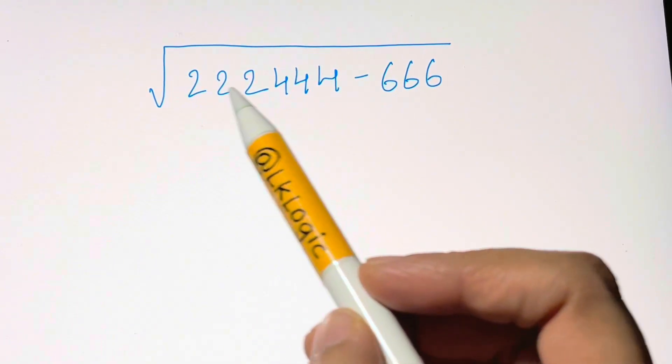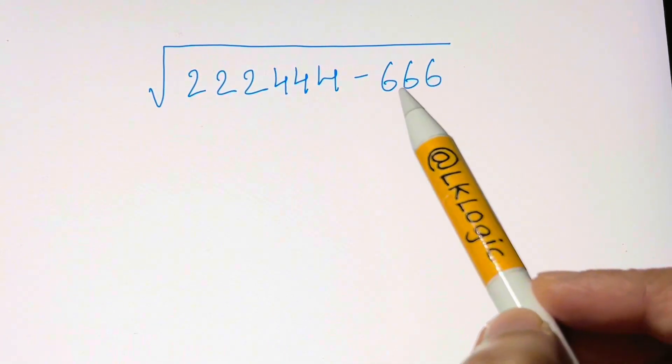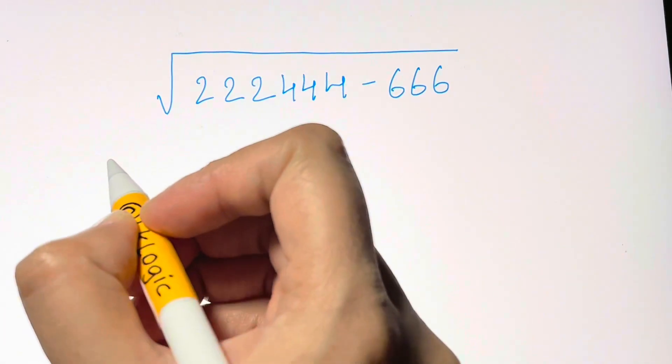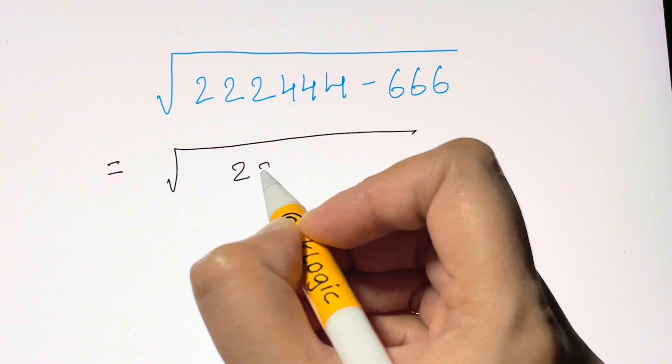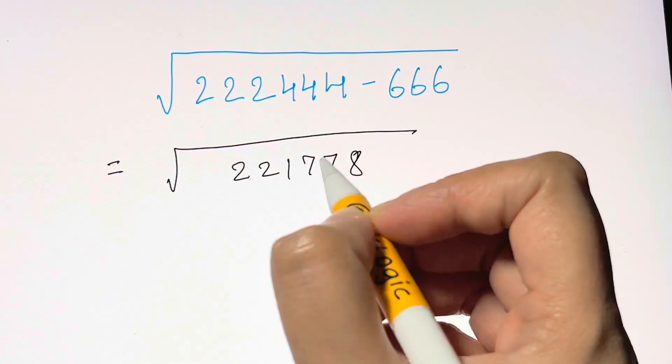Hi guys, can you solve this easily? Under the root of a big number minus 666. Take your calculators, you just get under the root of 221778 and what's the root of that? Easy, right?